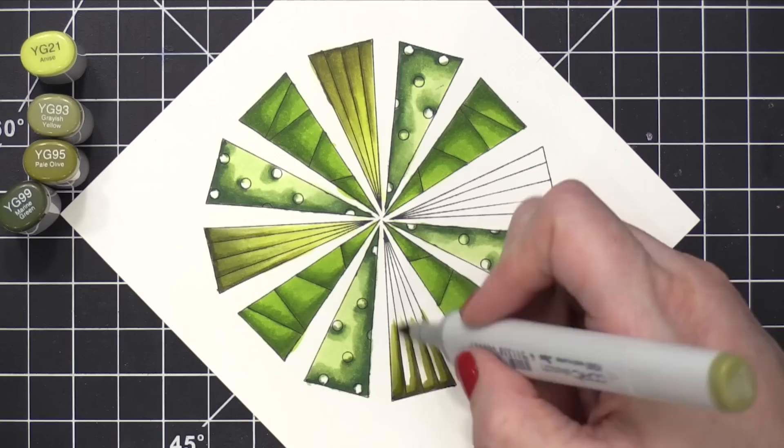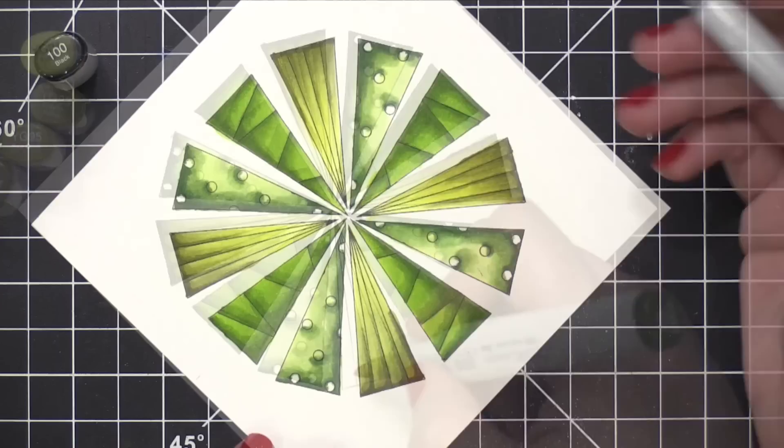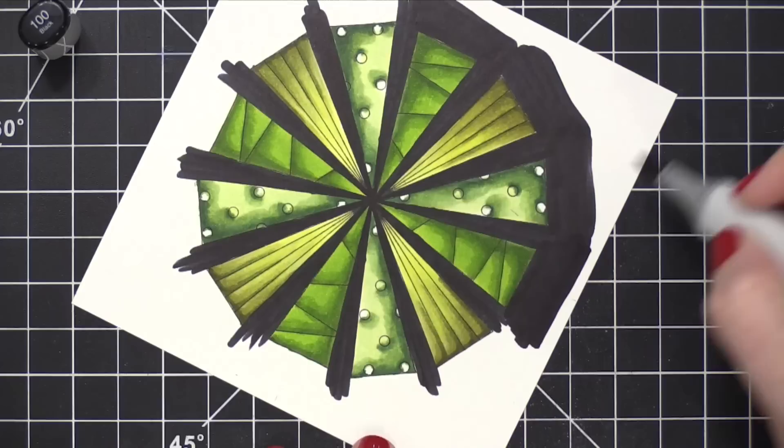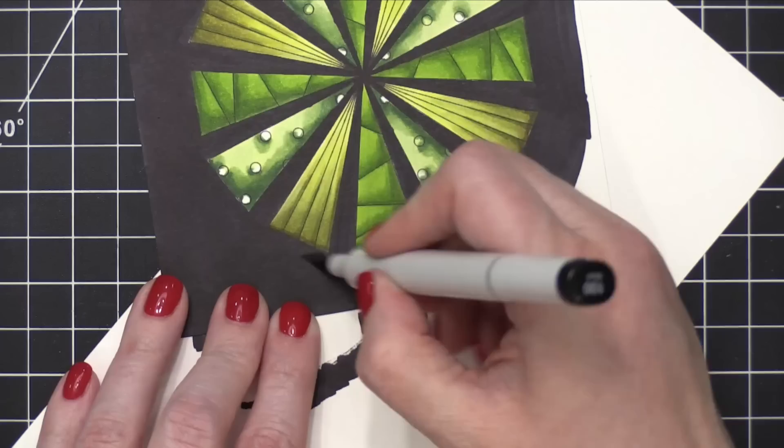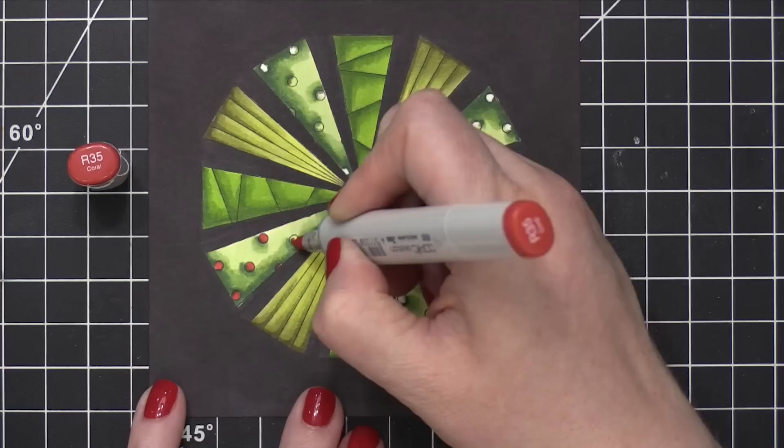For this last color combo, I actually started with the darker color, YG99, add a little bit of YG95, blend it up with YG93, and then did a full wash of YG21 to finish off that tree. I then grabbed a 100 black Copic marker and filled in all of the gaps around those trees. I really loved how dramatic that shading was on the trees, and I leaned into the drama by coloring the background black.